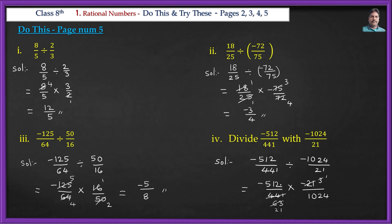After all cancellations of 512 and 1024 (where 512×2=1024), the final answer simplifies to -1/1 = -1.